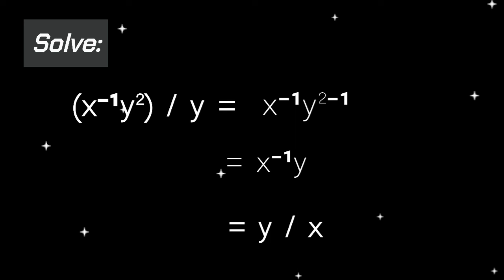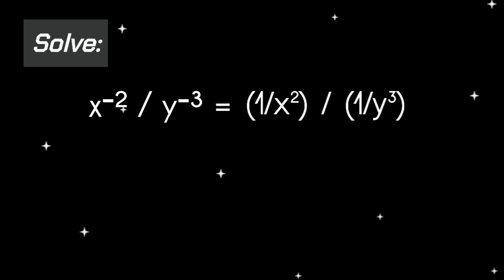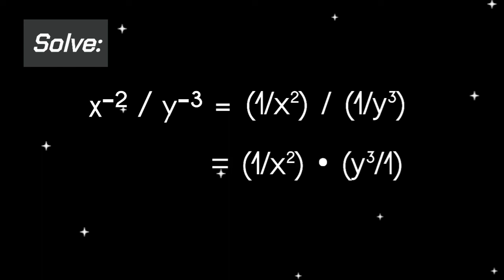For our last example, let's try a more complicated problem: x raised to the power of negative 2 over y raised to the power of negative 3. Applying the negative power rule, that becomes 1 over x squared, divided by 1 over y cubed. Dividing fractions, that is 1 over x squared times y cubed over 1, which equals y cubed over x squared.